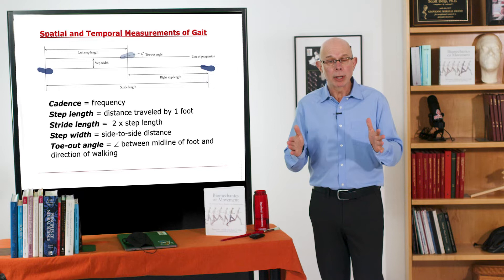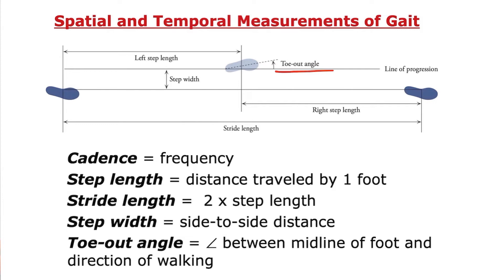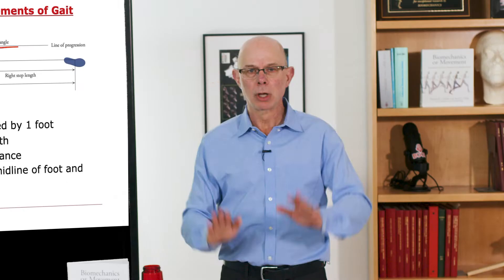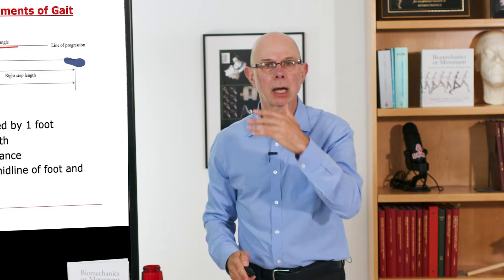There's a toe-out angle as well. That's the angle that your feet make with respect to the line of progression. If your feet are pointed straight along the line of progression, the toe-out angle is how far they're toed out or toed in. Normally, with some variation, people are toed out about 10 or 15 degrees as they walk. So those are some key simple measurements of space and time with respect to walking.